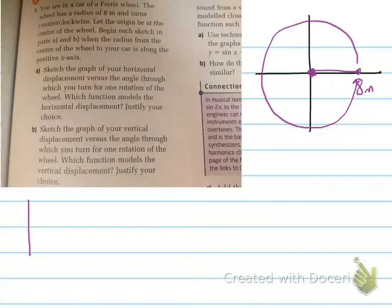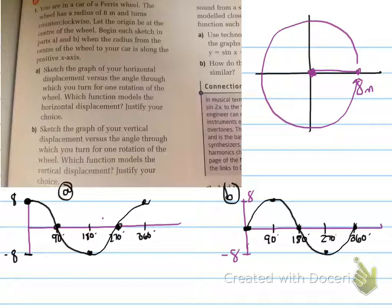You're to sketch the graph of the horizontal displacement versus the angle through which you turn for one rotation of the wheel, which function models the horizontal displacement. So what's happening is that these are your two functions.